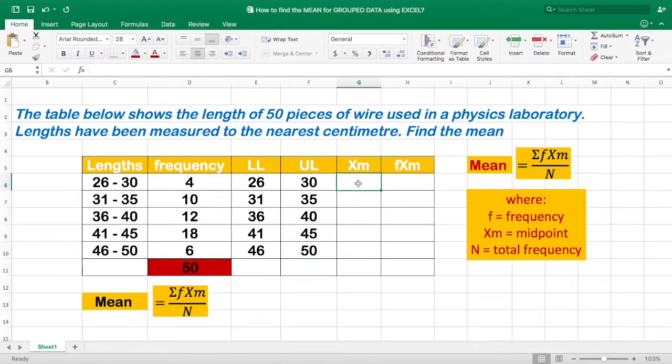How do we do that? Equal sign, we have to put 26 and 30 together, because we will still divide it by 2. Then click the first lower limit, plus the upper limit, parentheses, divide by 2, and enter. And we got 28.